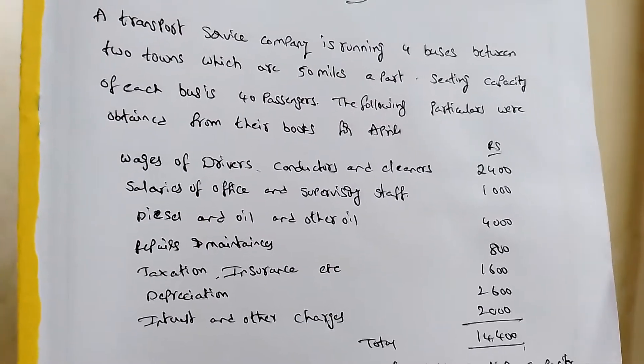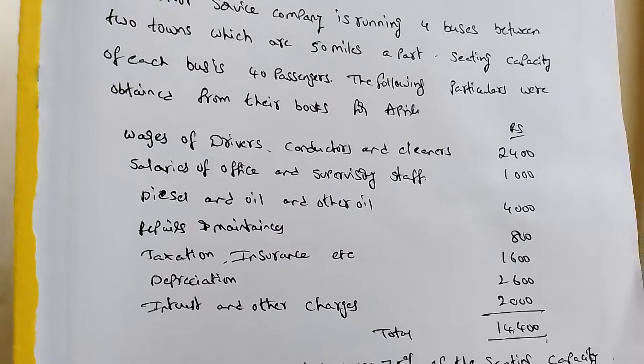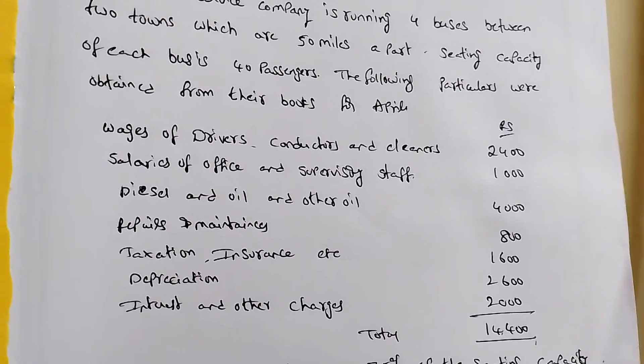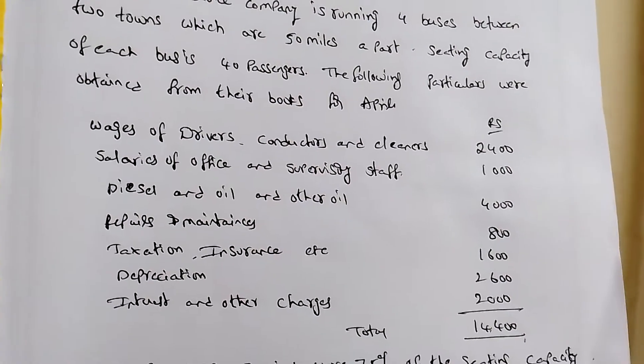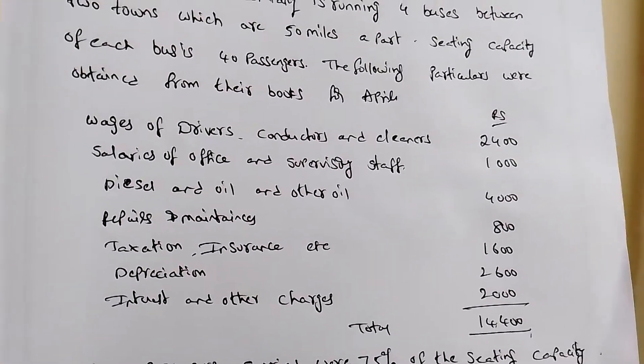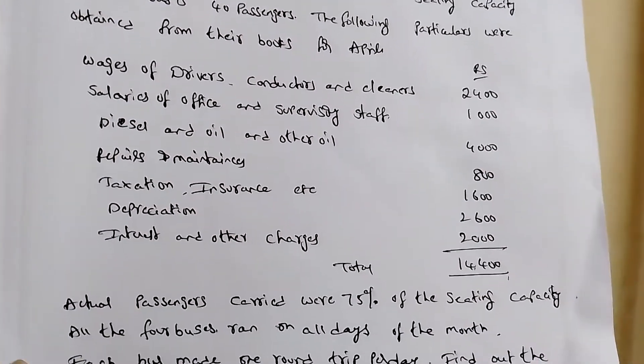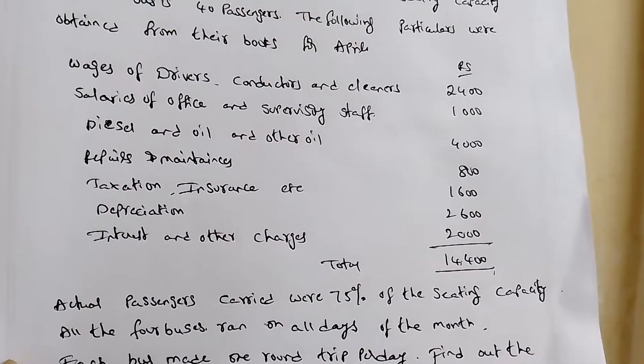The following particulars are obtained from their books of April: wages of driver, conductor and cleaners 2000 rupees, 2400 rupees, salary of officer and supervisor staff 1000 rupees.